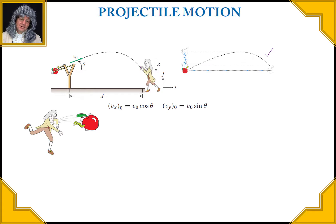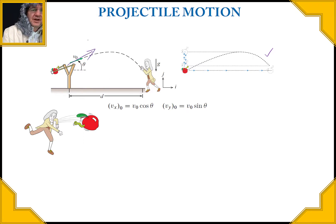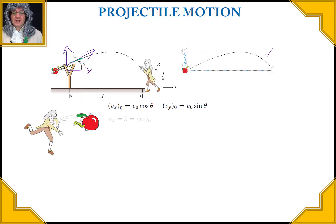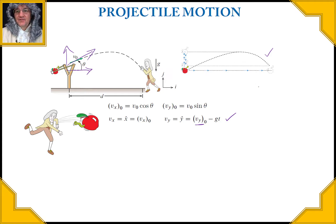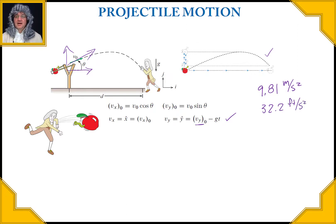The velocity in the y direction is determined initially by the sine of the launch angle. Launching at an angle gives us a y-component and an x-component; the y-component changes while the x-component stays constant. The y-component of velocity is: initial y-velocity minus g times t, where g is the acceleration due to gravity — 9.81 m/s² in SI and 32.2 ft/s² in US customary units.